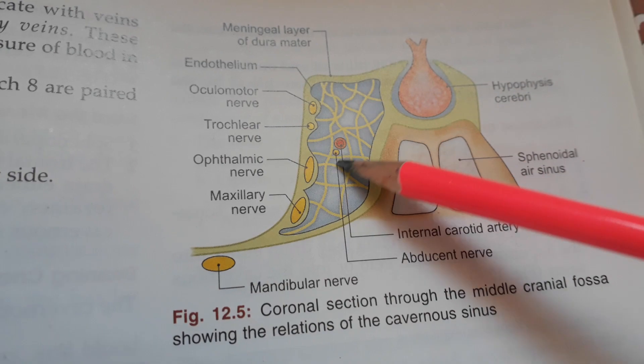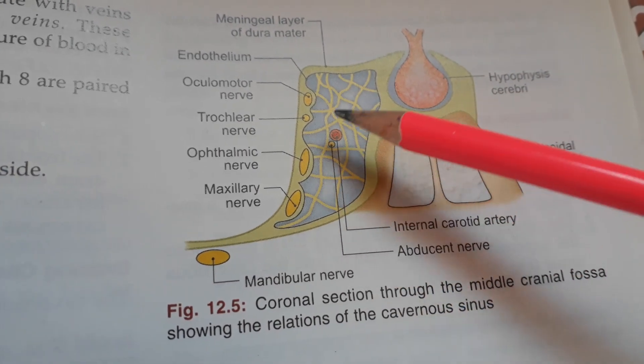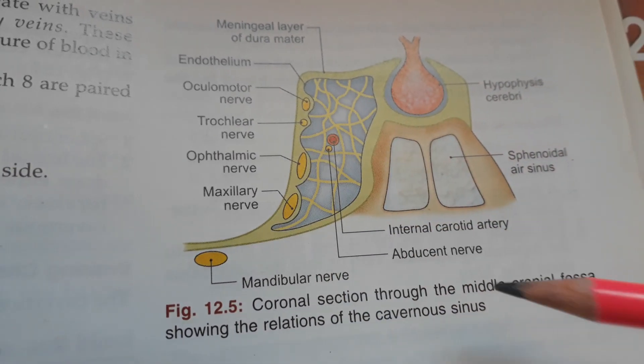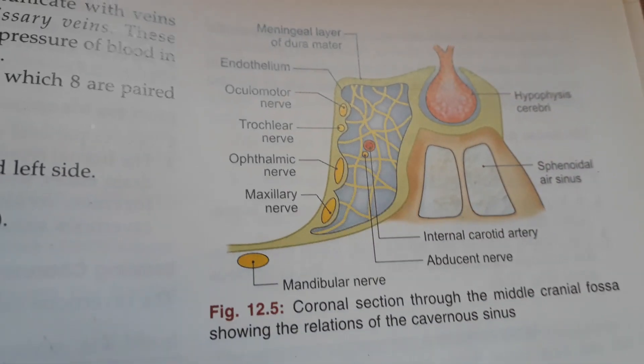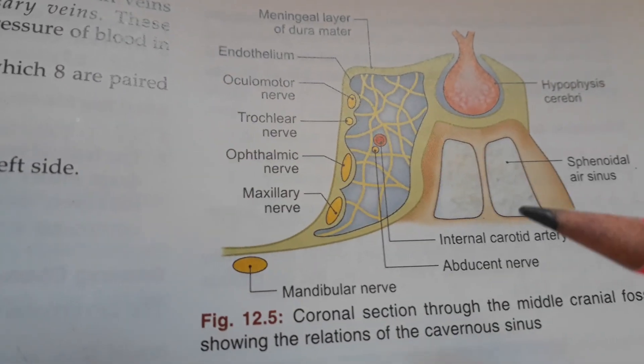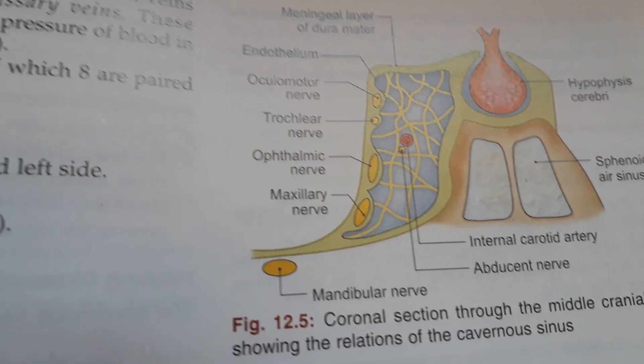The cavernous sinus contents include the oculomotor nerve, trochlear nerve, ophthalmic nerve, maxillary nerve, the internal carotid artery, and the abducens nerve.